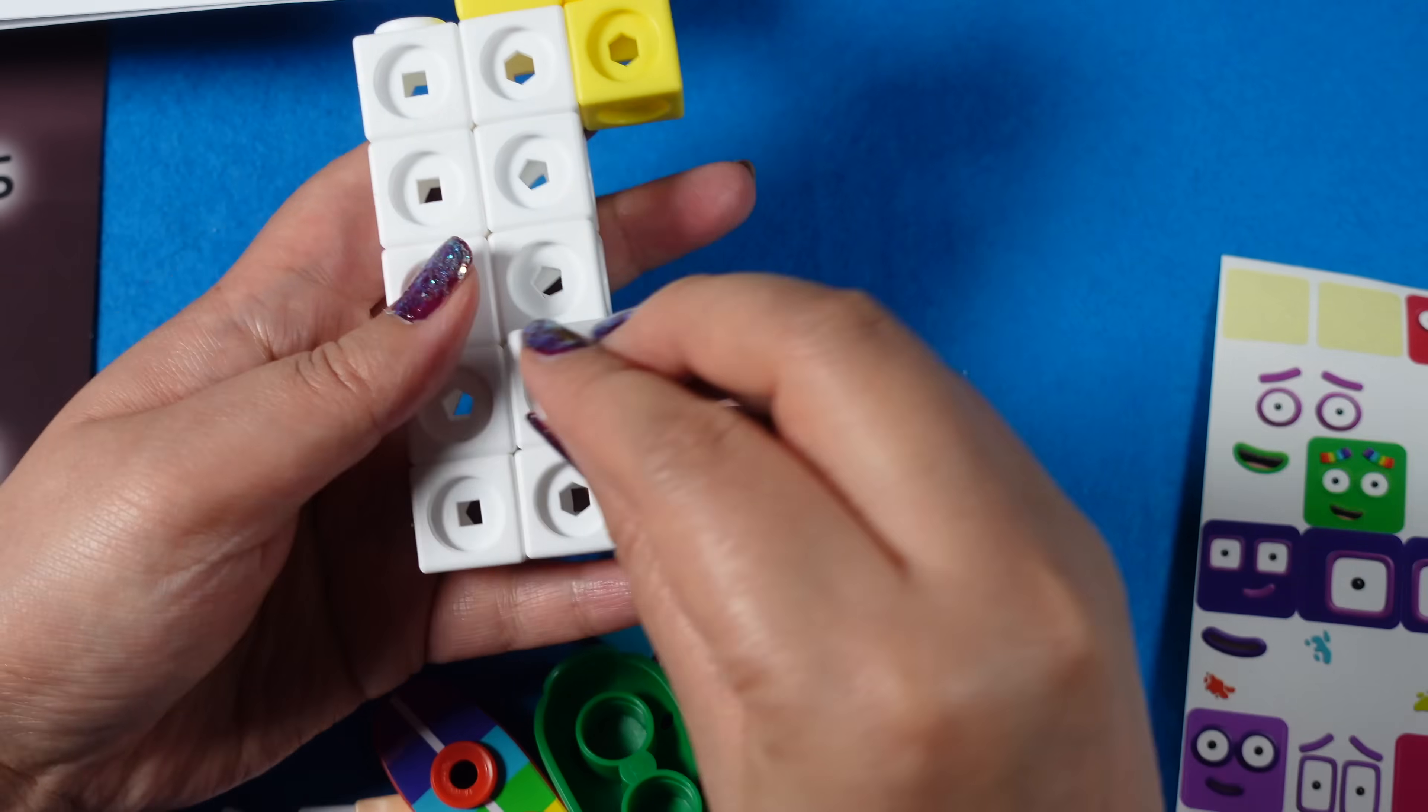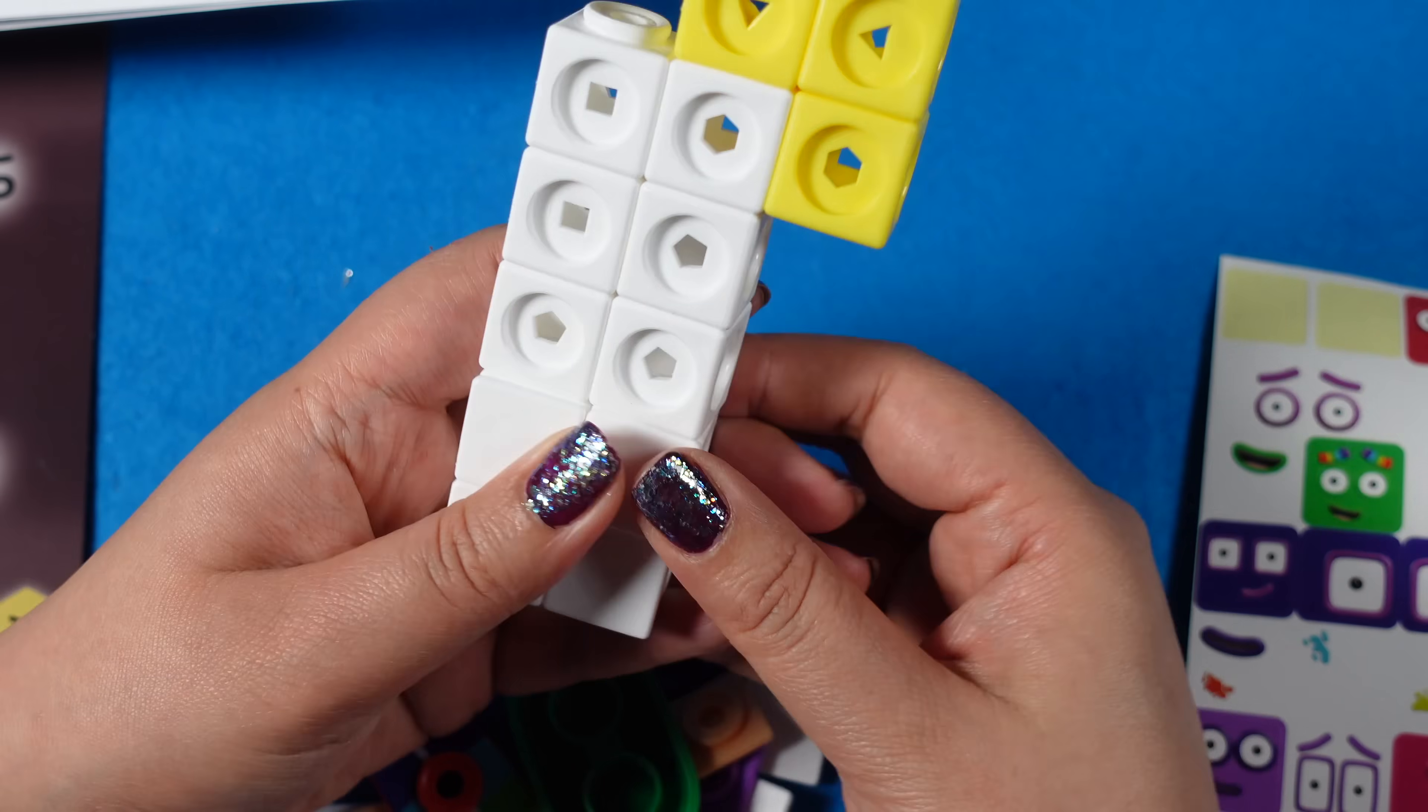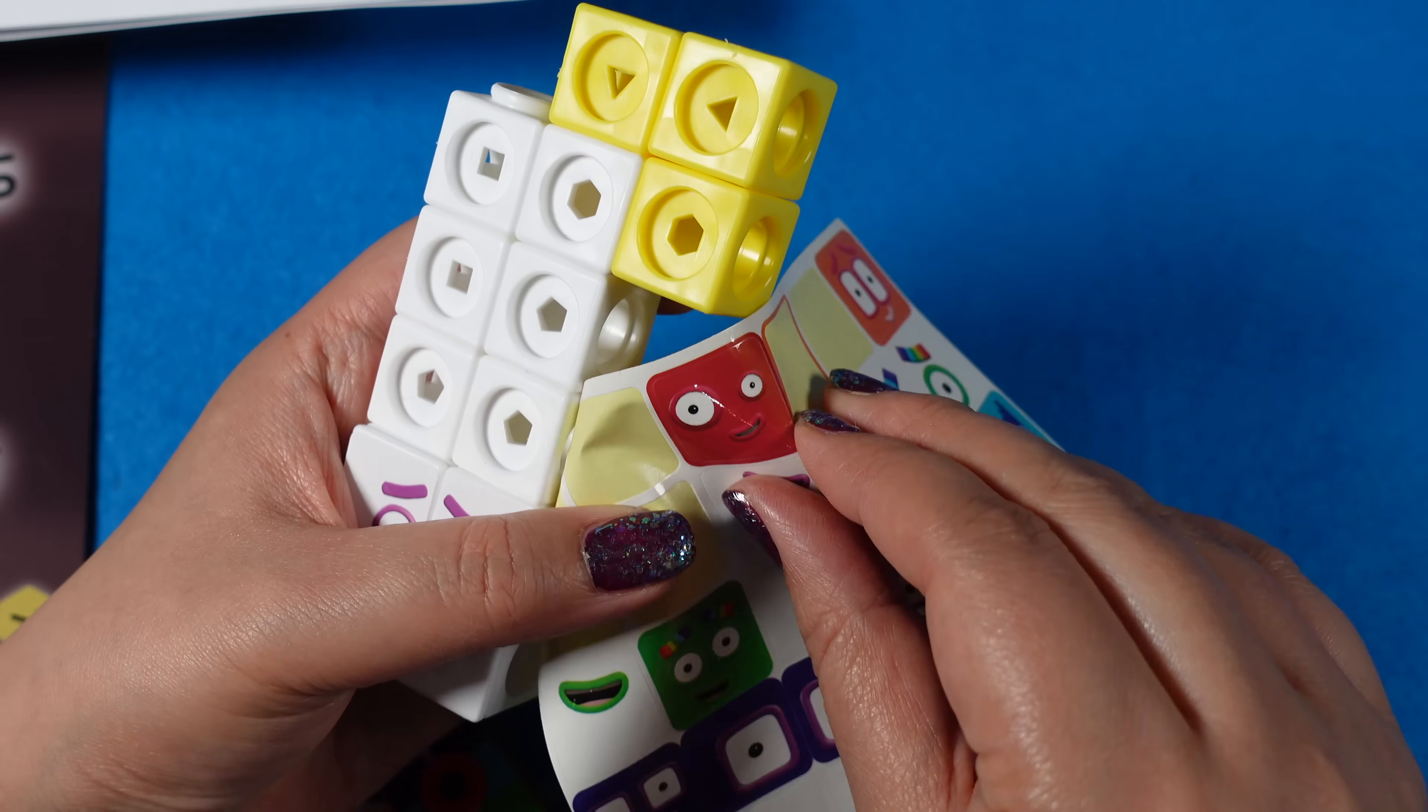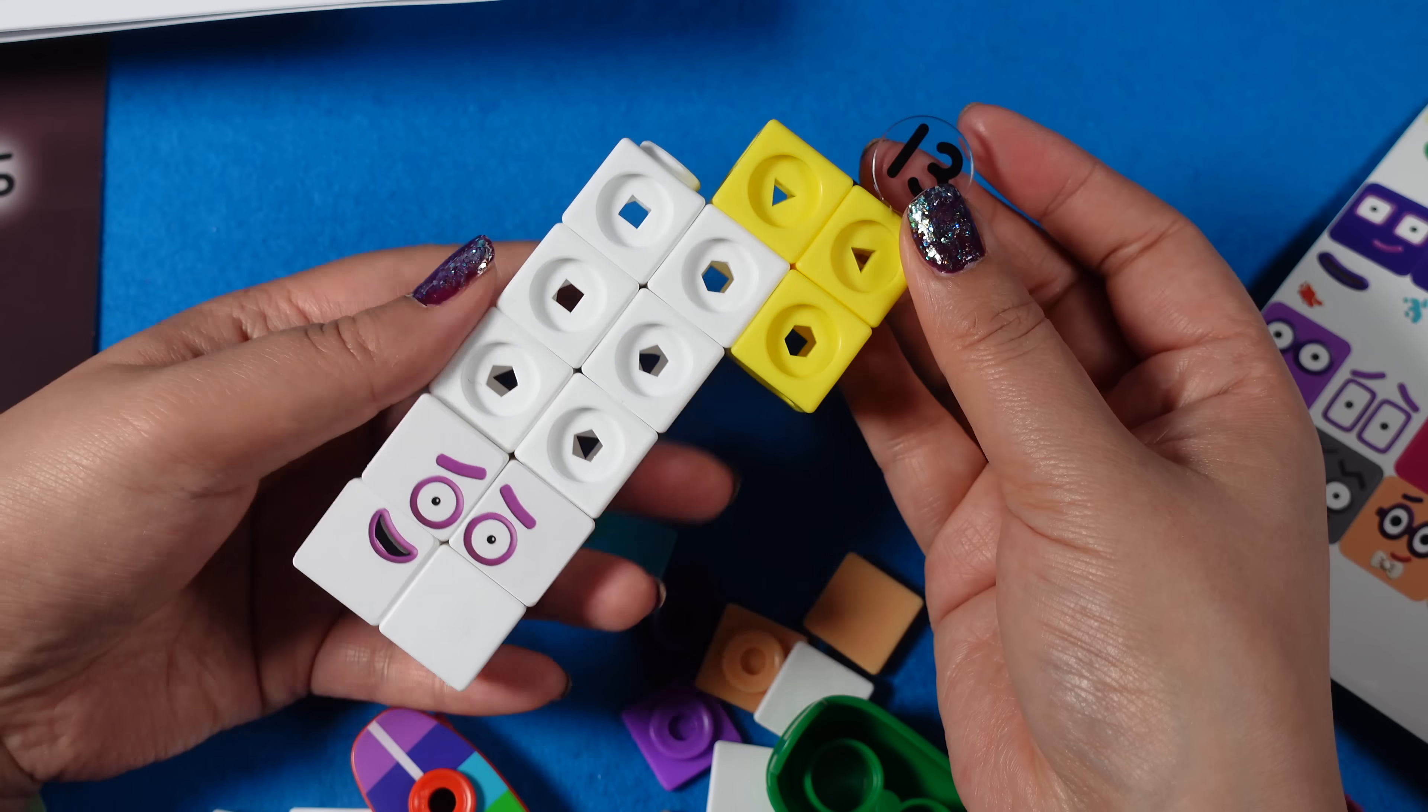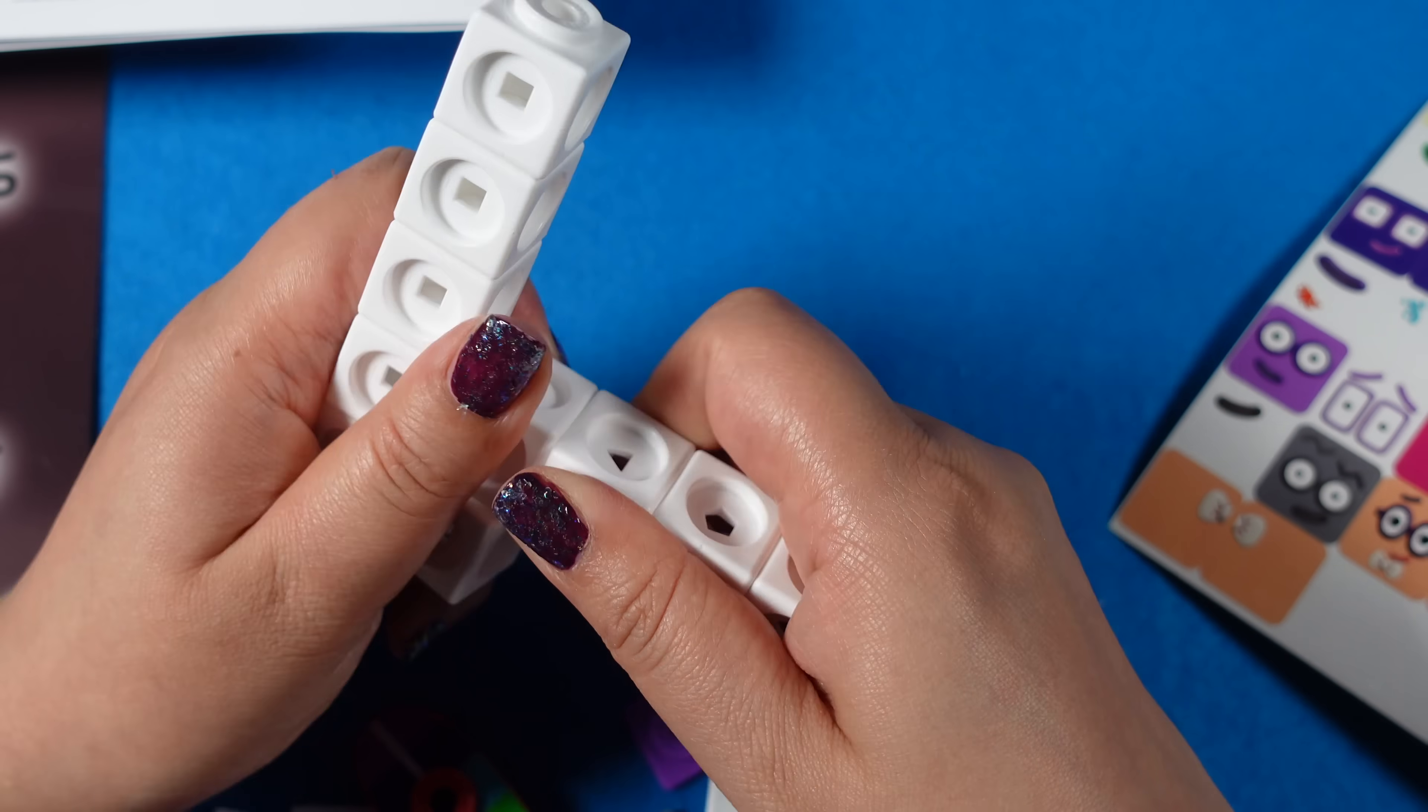And of course, with number 13 here, adding on the stickers again, you've got the correct amount of stickers where you can do them as the characters with a smaller face, or you can make them as the bigger shape, which is what I'm doing right now.